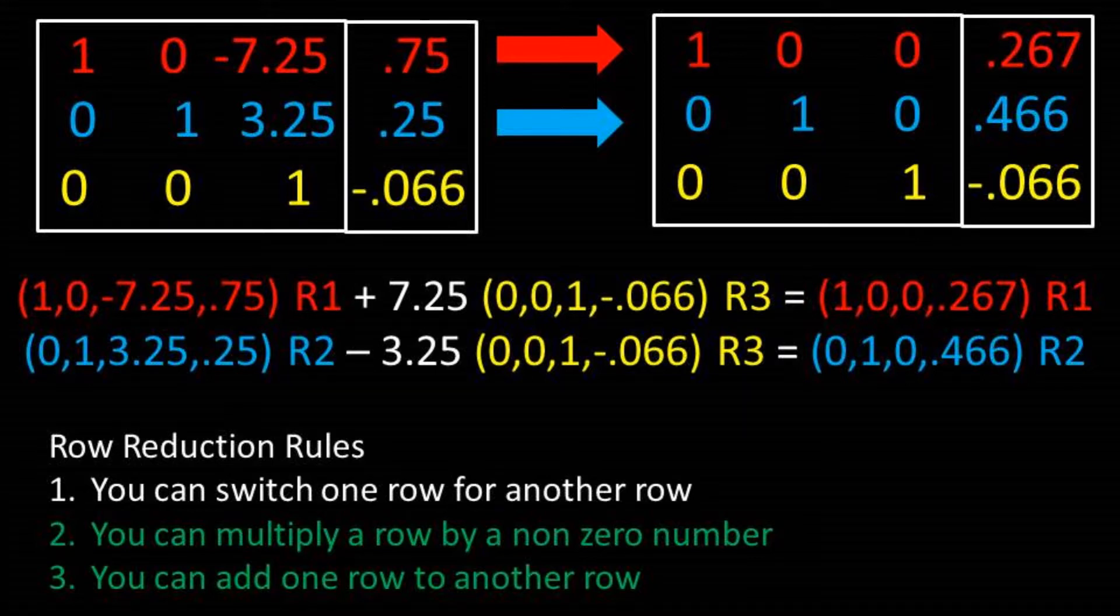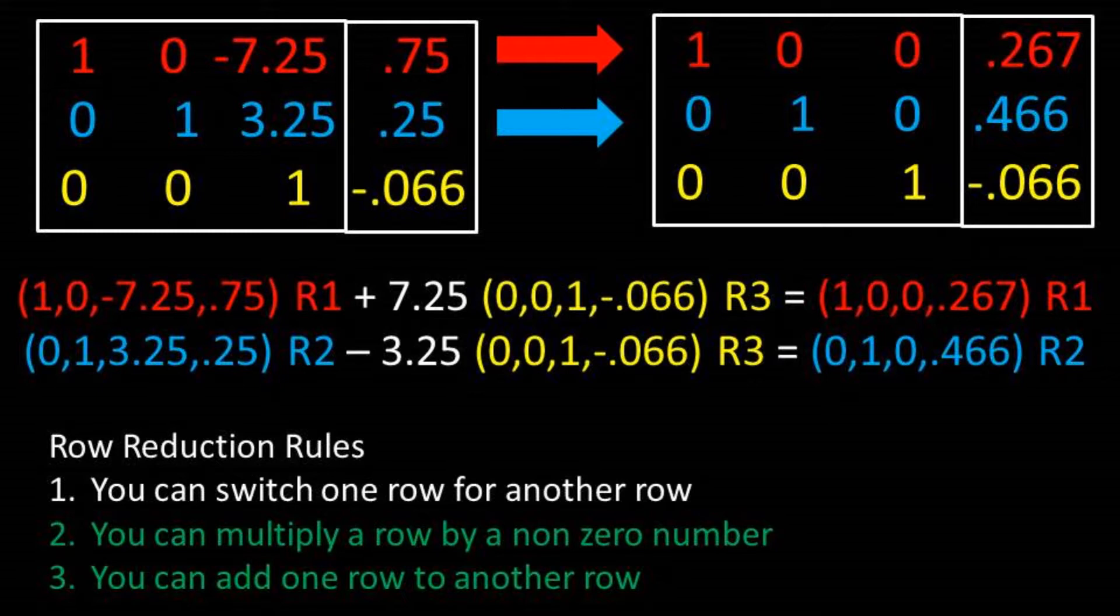Our final reduction to get a 0 in row 2, column 3. We will take row 2 minus 3.25 row 3.